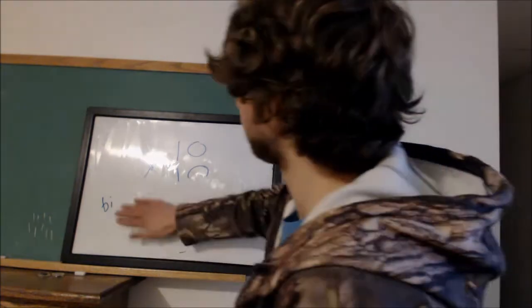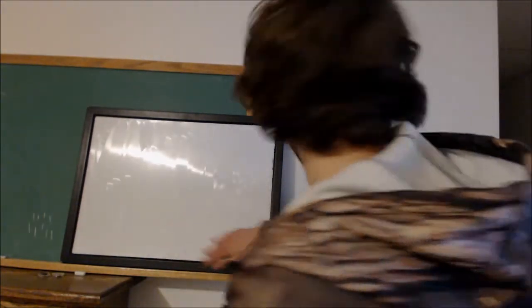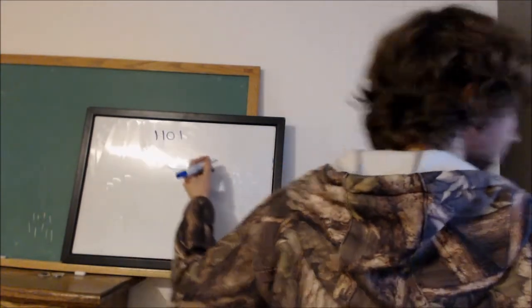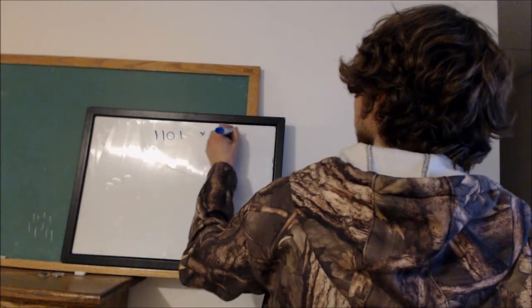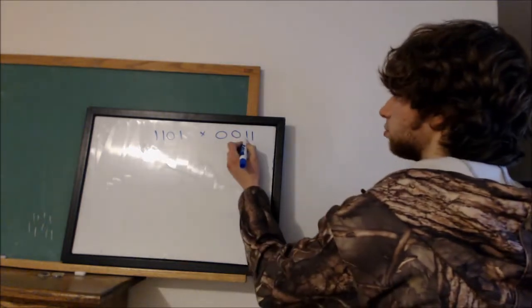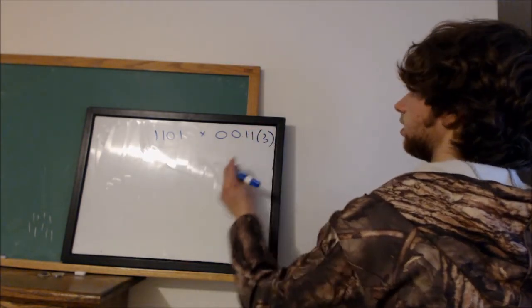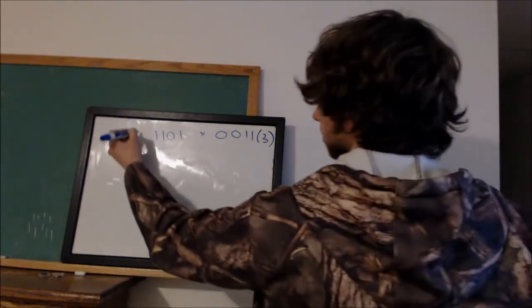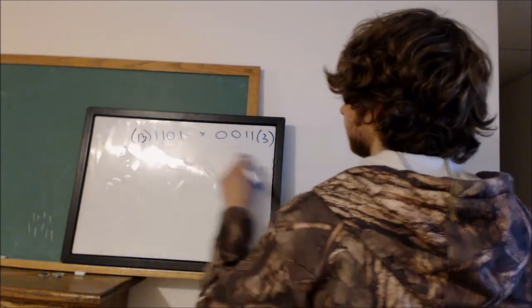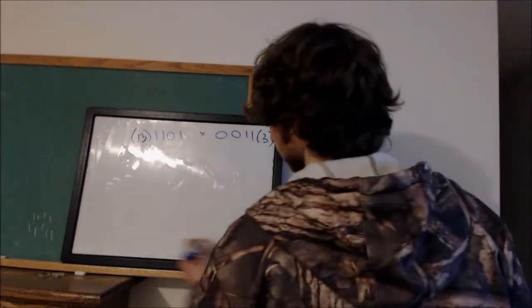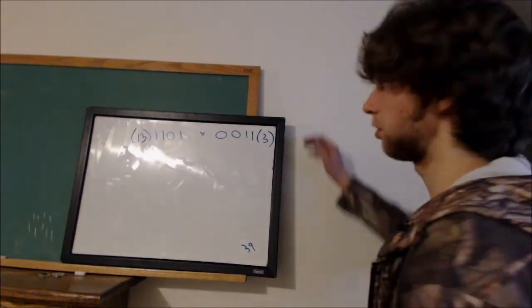So, here, let me try another example just to show you the process. I wrote an example down here, let's see what it was. All right, let's go 1101 times 0011. All right, so for our sake, we can figure out what these are, just to make sure we got it right. We got 1 plus 2, so this is going to be 3. Now, I got 1 plus 4 plus 8. So, 8 plus 4 is 12, plus 1 is 13. So, this is 13 in decimal. This is 3 in decimal, so our final answer should be 39.